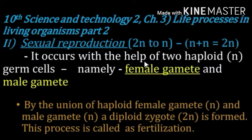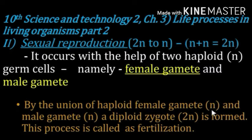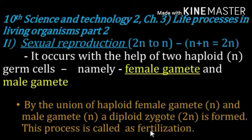This occurs with the help of two haploid germ cells, namely the female gamete and the male gamete. By the union of a haploid female gamete with n number of chromosomes and a male gamete with n number of chromosomes, a diploid zygote of 2N is formed. This process is called fertilization.